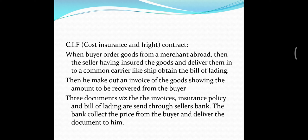The bank collects the price from the buyer and delivers the documents to him. When a buyer buys goods from abroad under a CIF contract, the merchant abroad would have already insured the goods. That insured amount, plus the delivery charge and all other expenses, will be recovered from the buyer. The seller has already insured the goods and paid the insurance premium, so that premium will be recovered from the buyer along with all other invoice expenses.